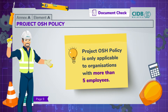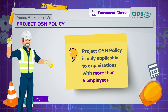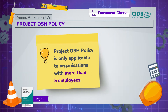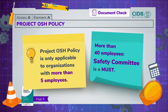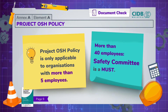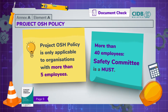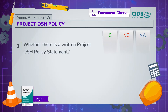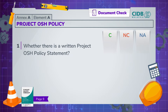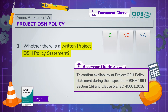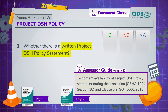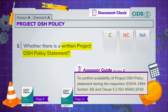A project with more than five employees must have a project OSH policy. Under Occupational Safety and Health Act Section 30, if there are more than 40 employees, the project needs to also have a safety committee in place. If this section applies, proceed with checking if there is a written project OSH policy statement. Please refer to page 22 to 30 of CIS 10 for the Assessor Guide.